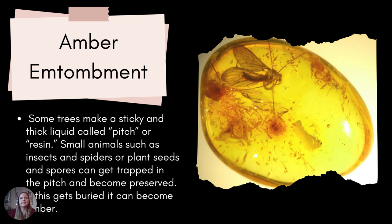Amber entombment is the very popular reason why they could bring dinosaurs back to life in Jurassic Park. They had a mosquito preserved in amber, and because mosquitoes suck out blood, it had the blood of a T-Rex or something of that sort preserved inside the amber. They extracted it from the mosquito, patched it with some frog DNA, and made a dinosaur.